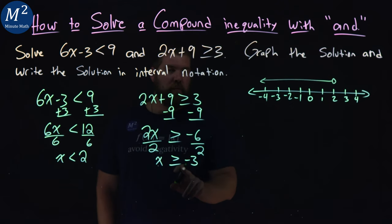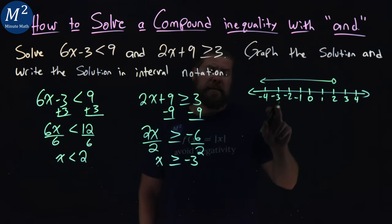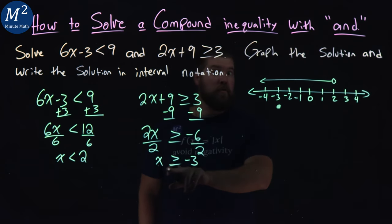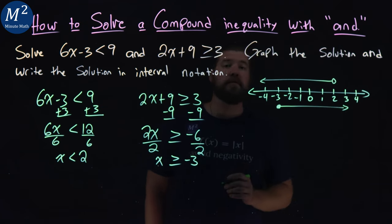Now let's look at this one: x is greater than or equal to negative 3. So I start at negative 3. Since it's equal to negative 3, I have a closed circle. From there, since x is greater than or equal to negative 3, the arrow goes to the right.